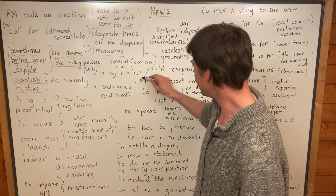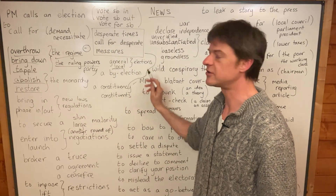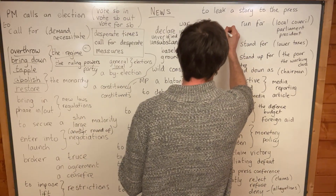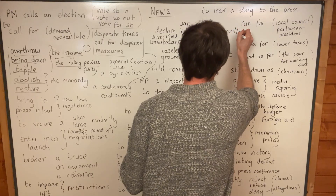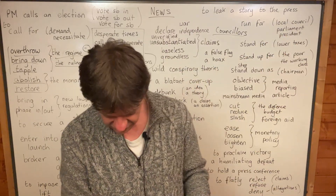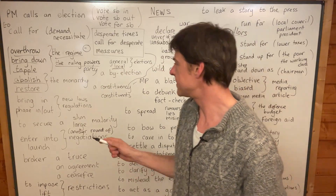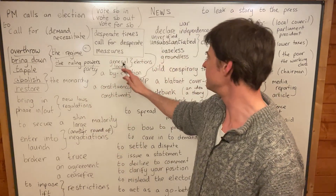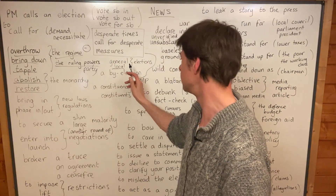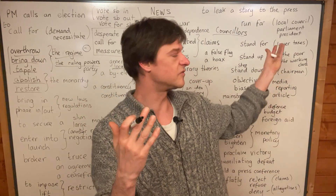A few more things about elections. We have a general election - that's when we choose the Prime Minister, or rather the ruling party. We have local elections, and that's when we choose councillors. They work for the local council - these are local politicians, much lower down the chain. So general elections to choose the ruling party, and local elections to choose the local councillors.